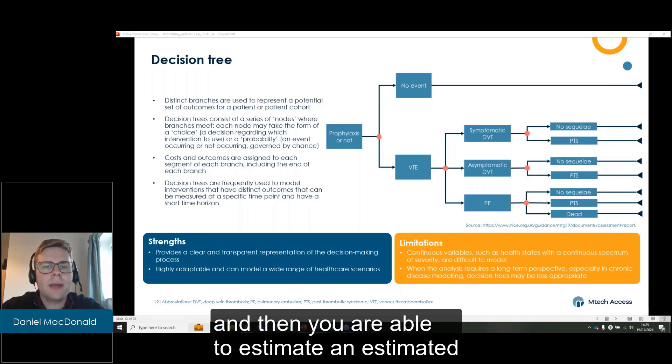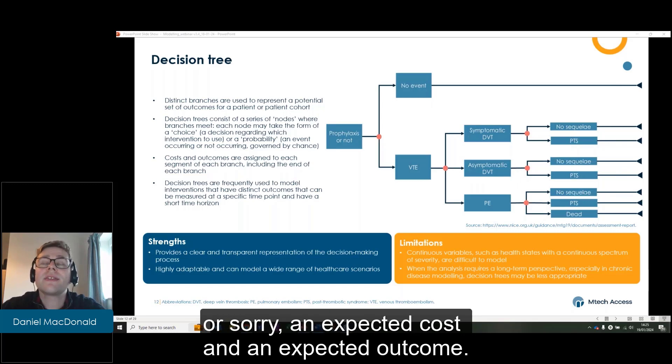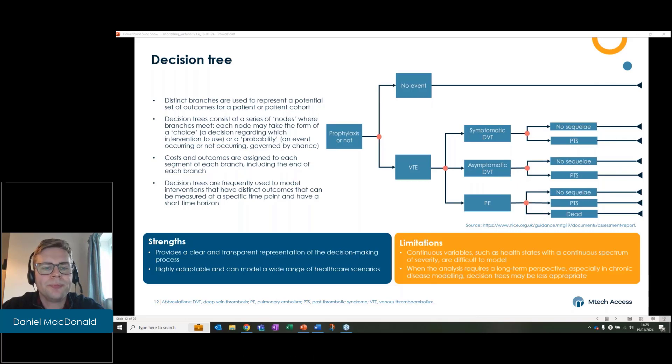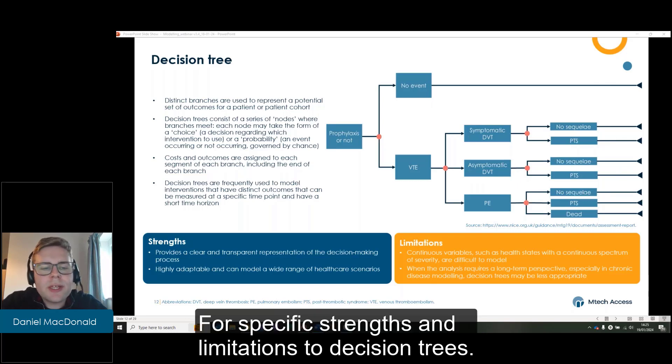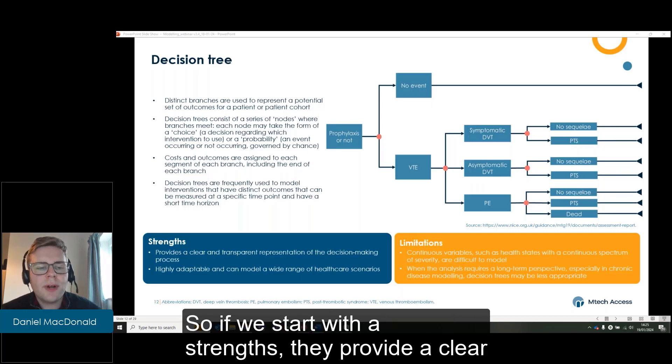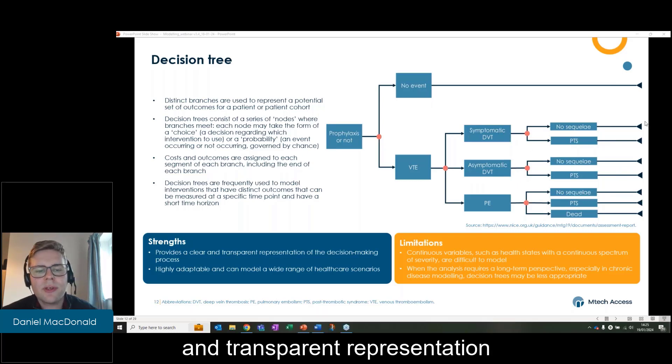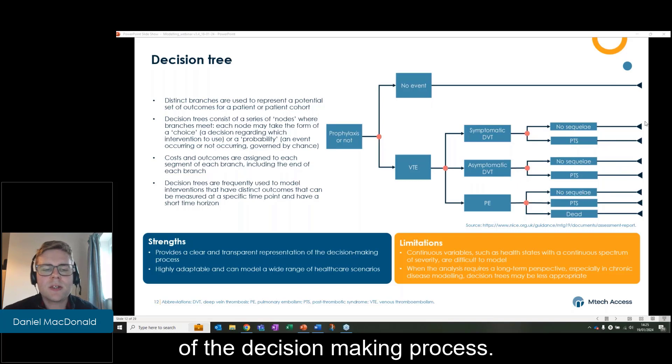And then you are able to estimate an expected cost and expected outcome, so an expected QALY. For specific strengths and limitations to decision trees, if we start with the strengths, they provide a clear and transparent representation of the decision-making process.